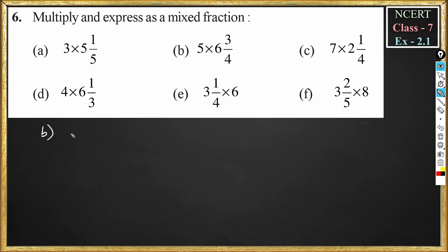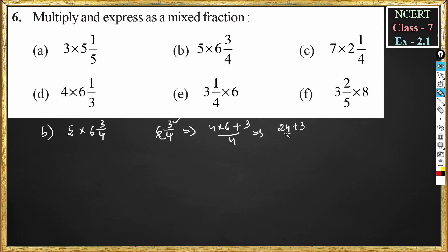Doing other problems will give you better clarity. Problem b: 5 into 6³/₄. We should convert 6³/₄ into an improper fraction. To do that, we multiply 4 into 6 and add the numerator 3, divided by 4. This equals 24 + 3 by 4, which is equal to 27/4.